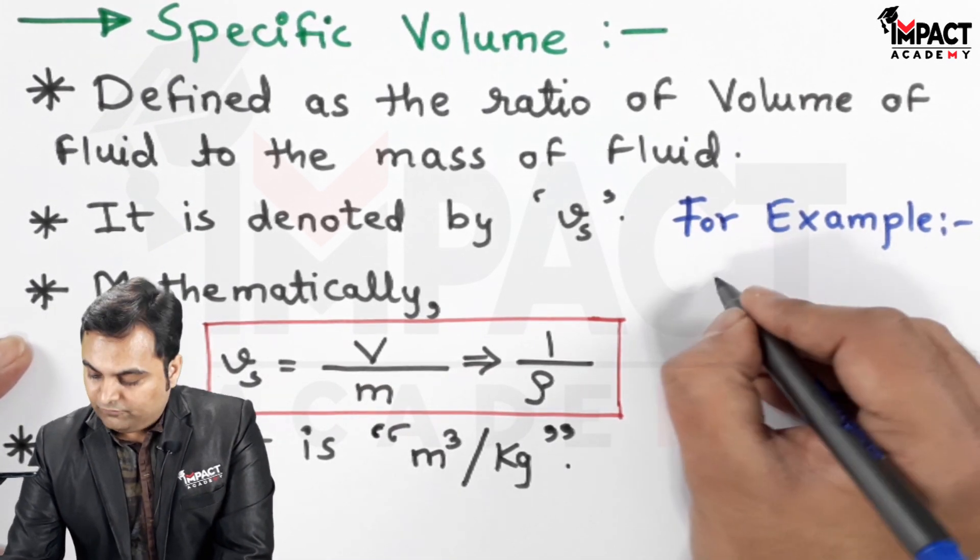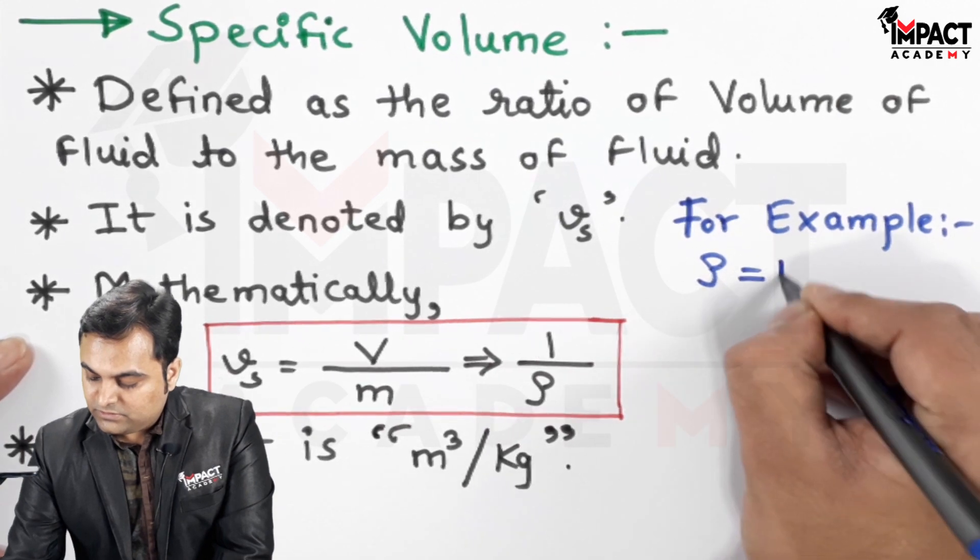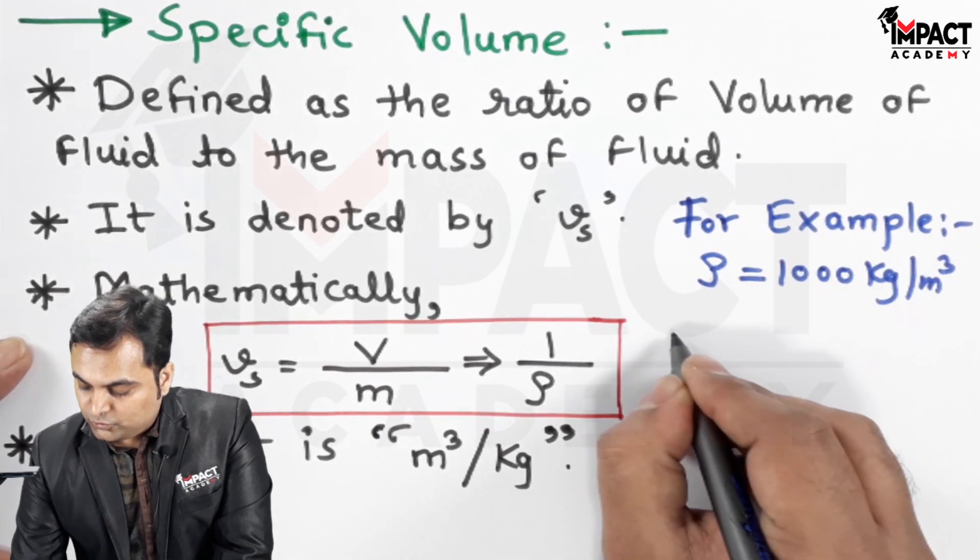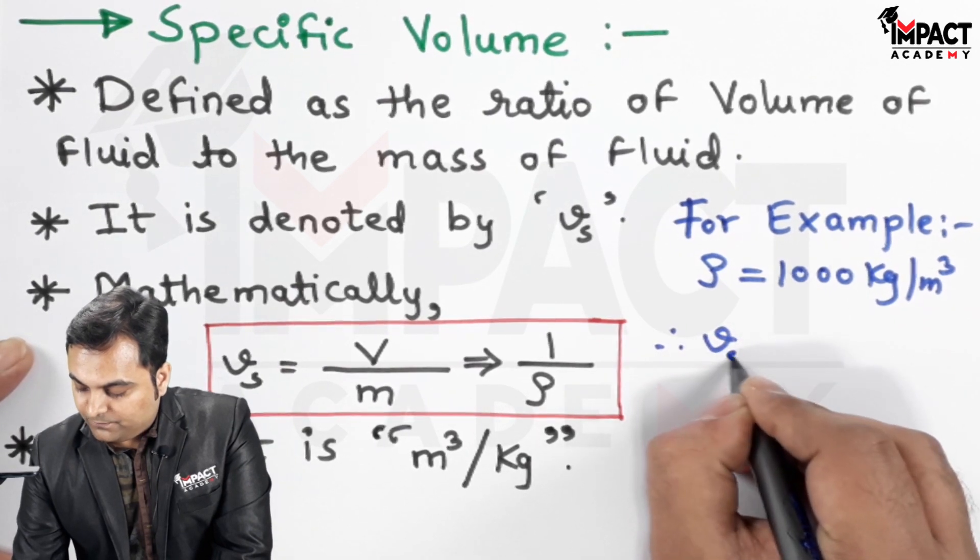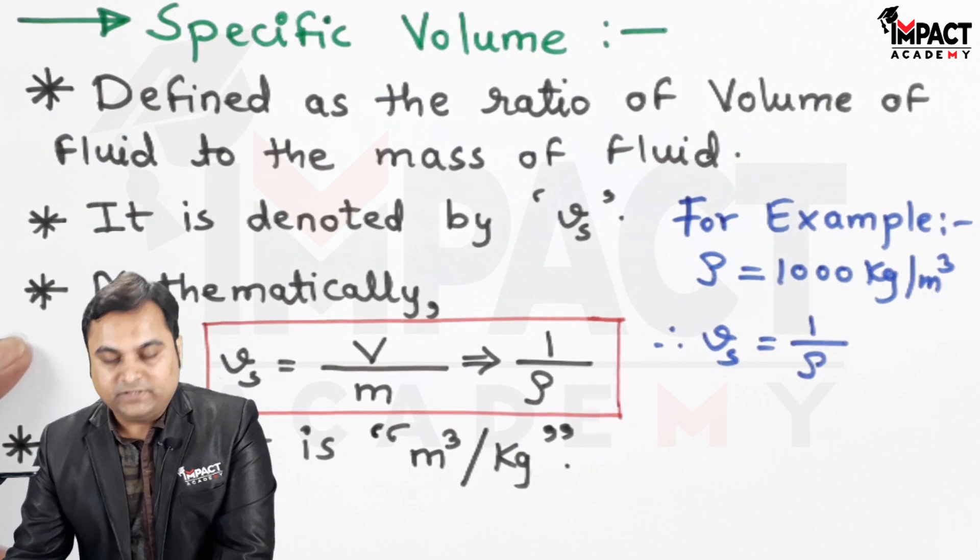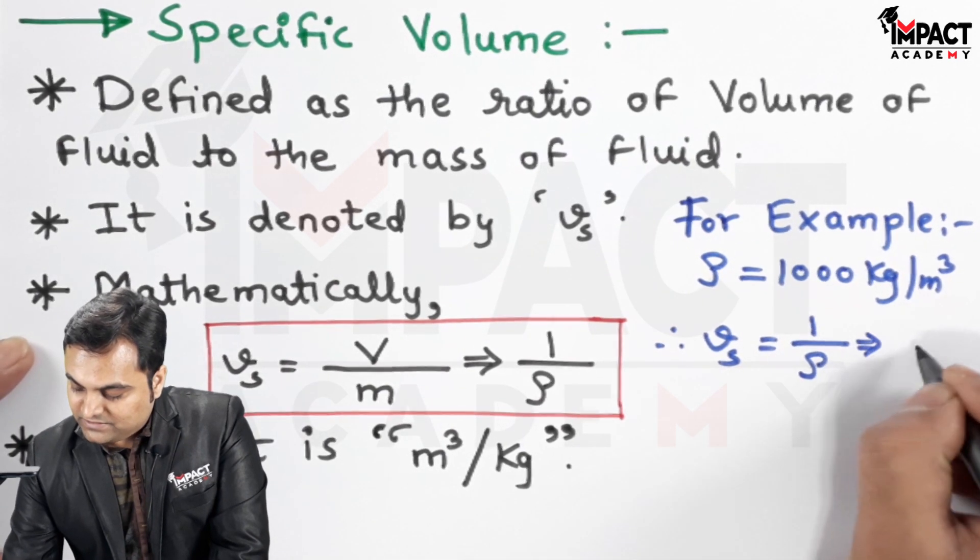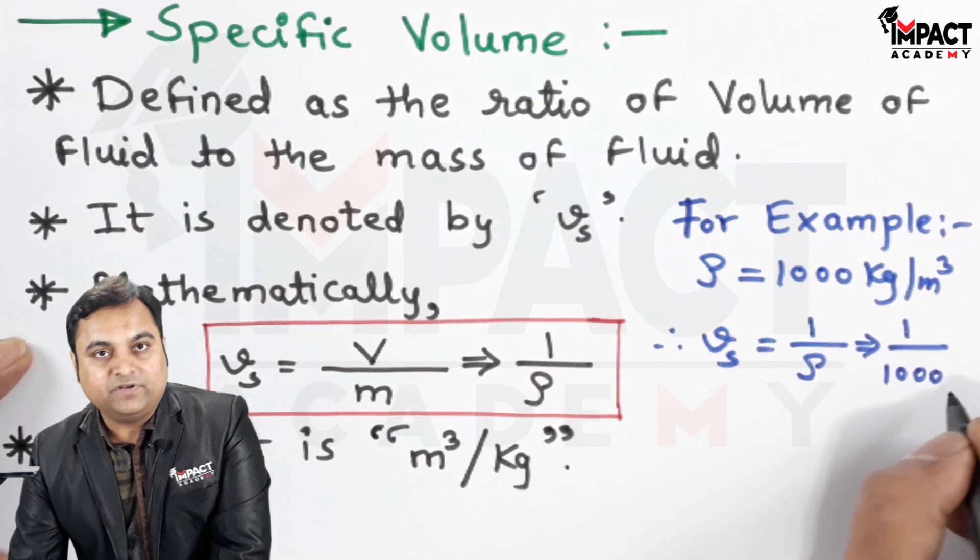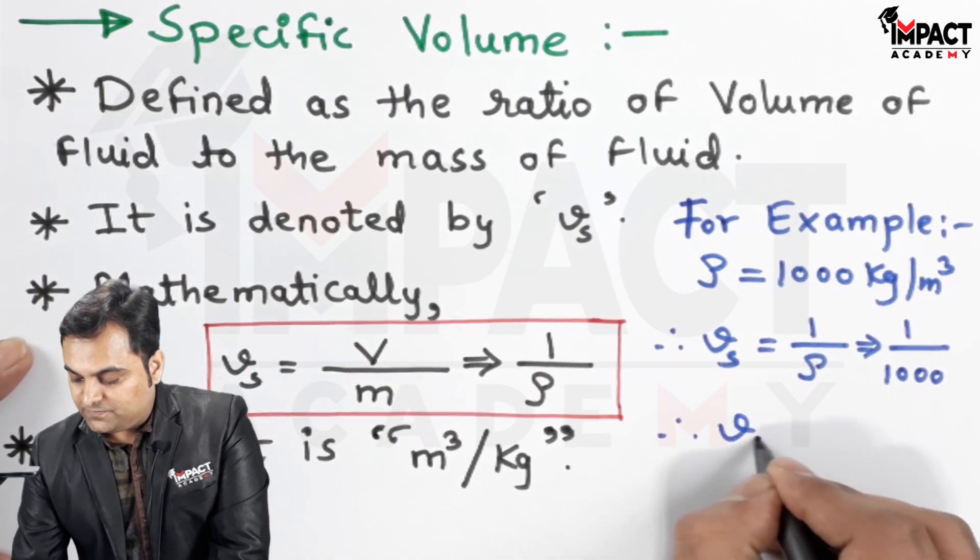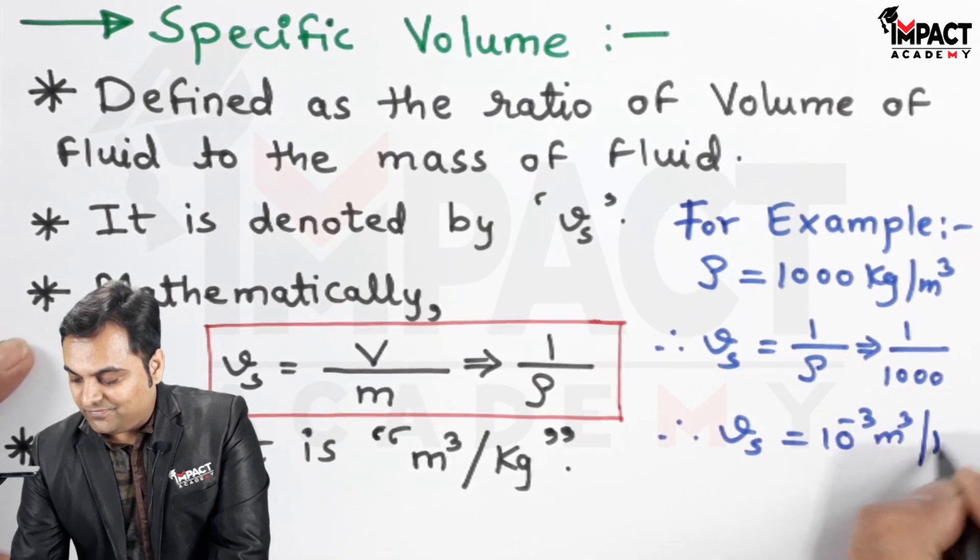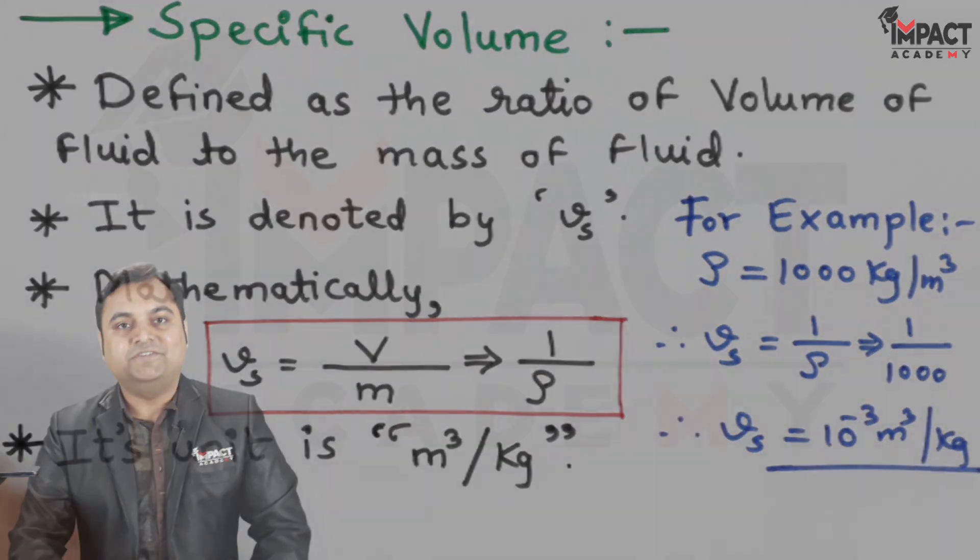The density of water is thousand kg per meter cube, so therefore the specific volume will be 1 upon ρ, that is 1 upon mass density, which is 1 upon 1000 means 10 raised to 3, so the specific volume would be 10 raised to minus 3, meter cube per kg.